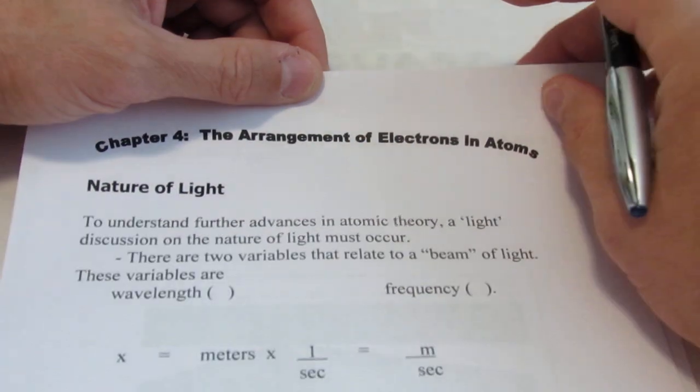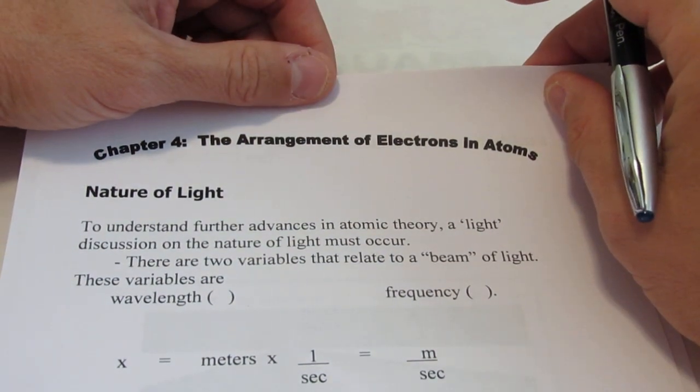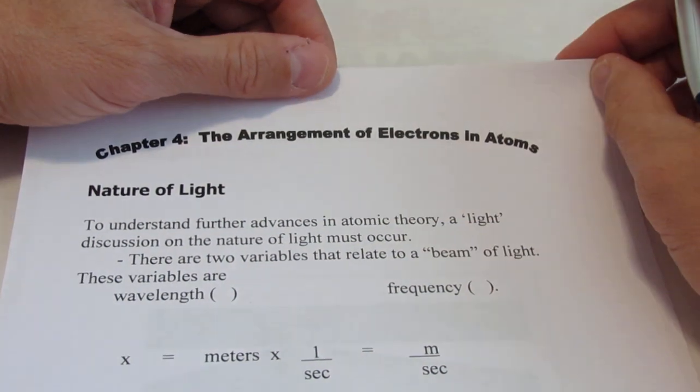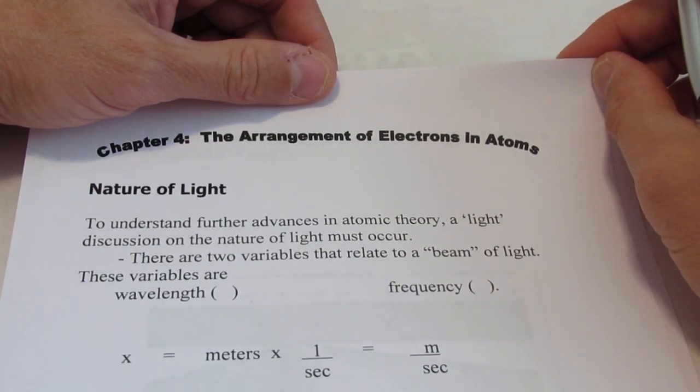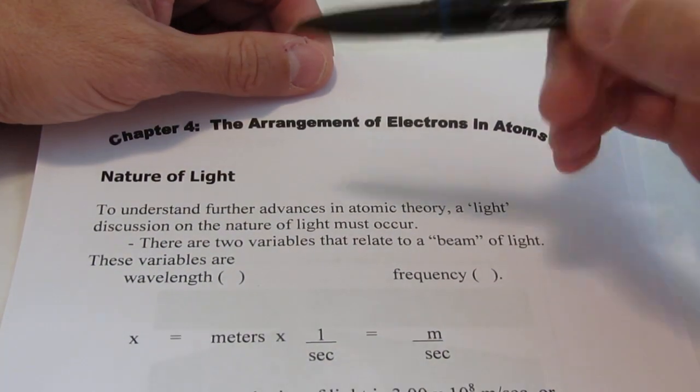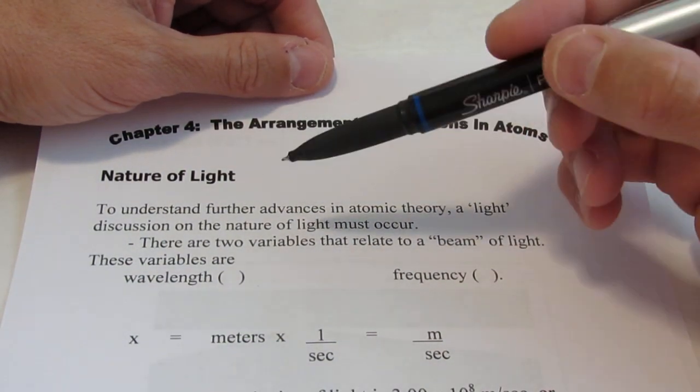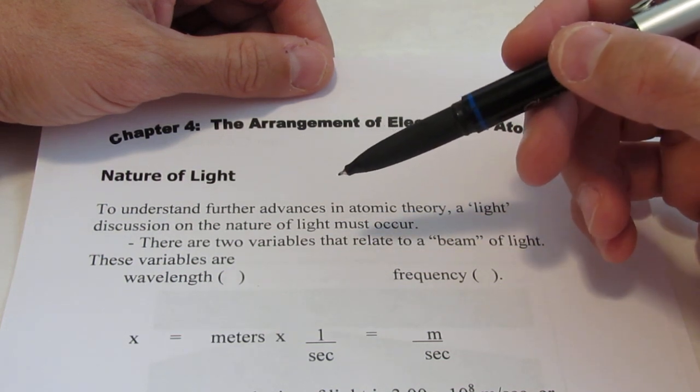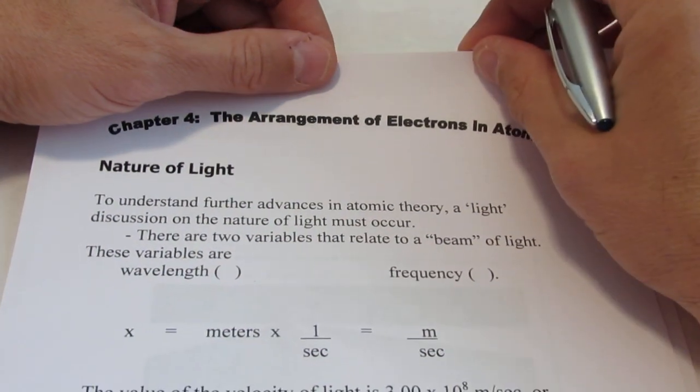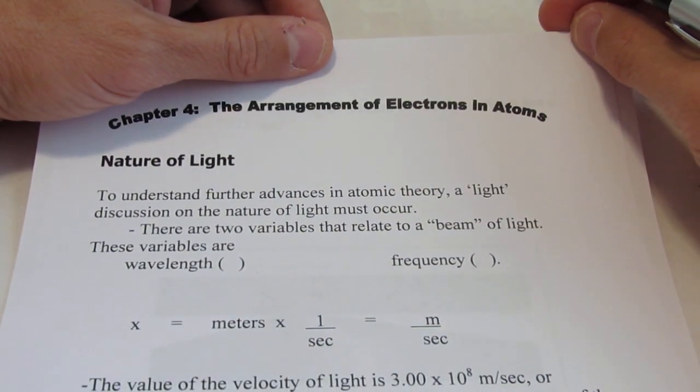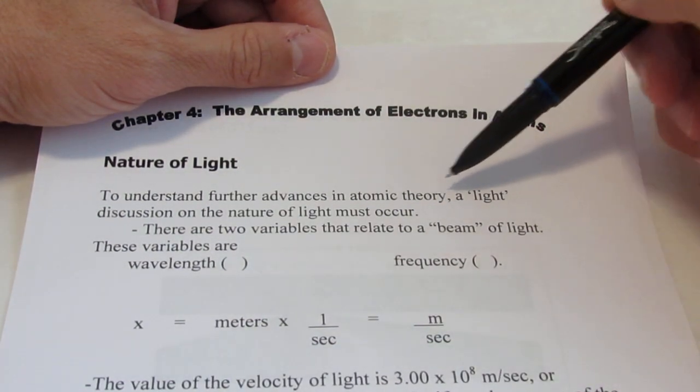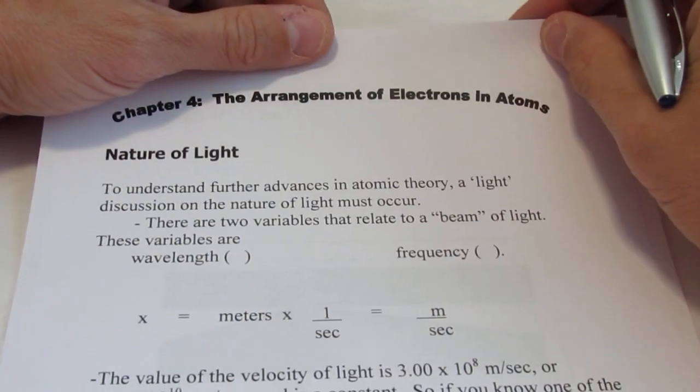Now, before we can proceed any further into atomic theory, we need to understand a little bit about the nature of light. So we're going to delve into physics land for the day, and we're going to discuss light and the nature of light. We're going to give a brief overview. You'd get a much more detailed overview in physics. Those of you students that have had physics before, this will be a considerable amount of review for you. So to understand further advances in atomic theory, a light discussion on the nature of light must occur.